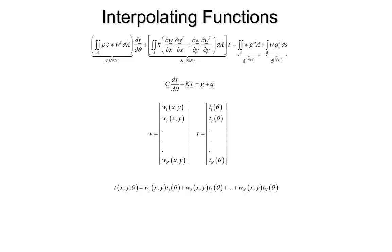This is where we stopped last time. Our finite element problem consists of N equations and N unknowns, put into matrix form. We have the C matrix, which is N by N, and it's related to a bunch of area integrals over the computational domain. Those area integrals involve these weighting functions — these interpolating functions W — and the unknown vector is a vector of unknown temperatures T.